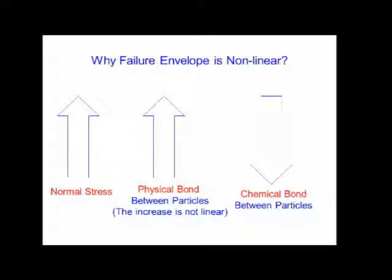Furthermore, even the increase in physical strength between particles is not linear. For example, if you have 30 psi shear strength at 15 psi confining pressure, you will not get 60 psi shear strength at 30 psi confining pressure — you will get less shear strength at 35 psi confining pressure.